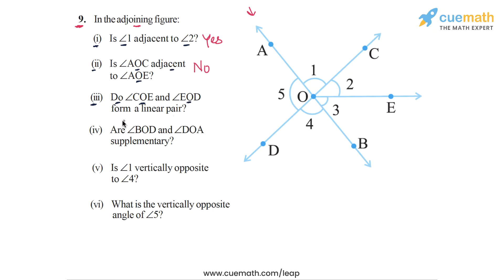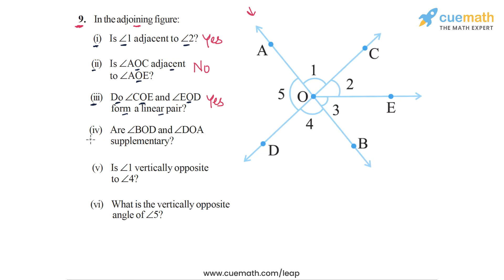In part three, the question is: do angles COE and EOD form a linear pair? Angle COE is this angle here, and angle EOD is this angle here. We can clearly see that these two angles complete the straight angle on line COD, and hence they form a linear pair. The answer for part three is yes.